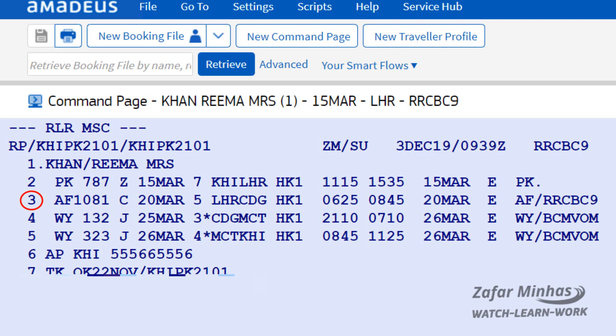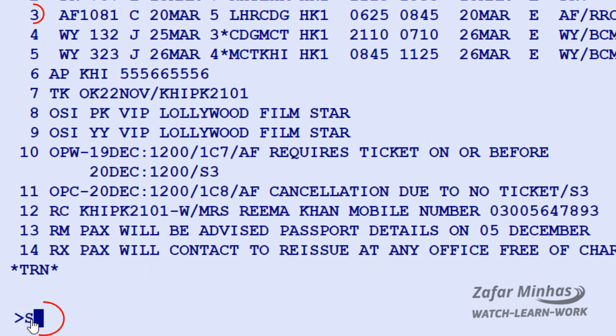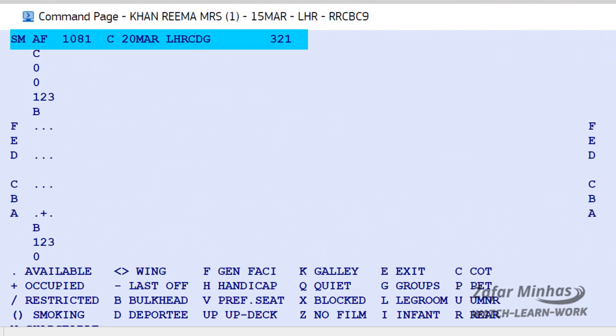For example, to display the seat map of segment number 3, enter SM — the Seat Map display transaction — plus 3 for AF1081 from the P&R. The Seat Map for flight Air France 1081 is then displayed.